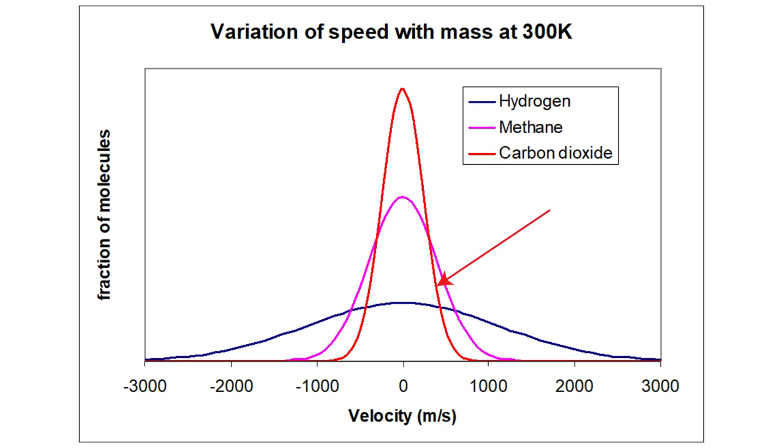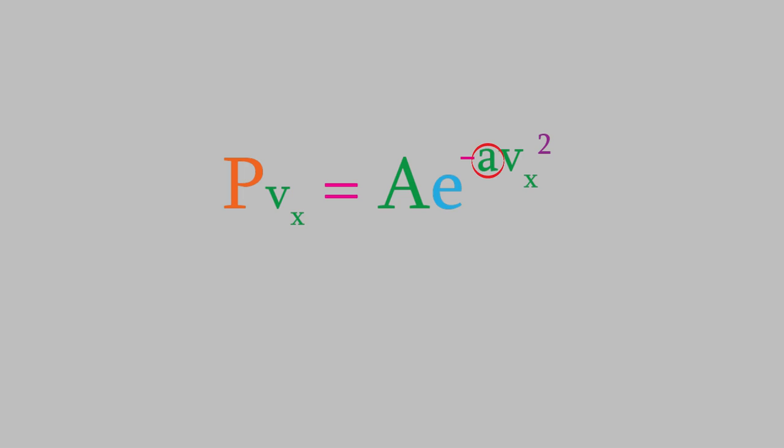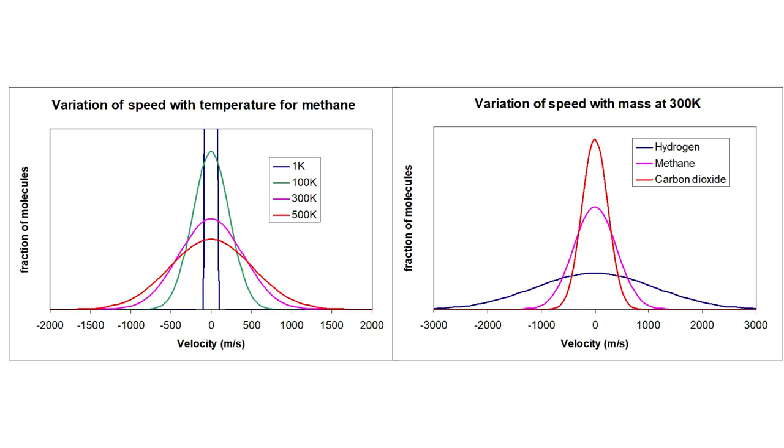So, what does all this tell us? For one thing, it means that the function A must involve both the temperature and the mass of the molecules, since both of those properties affect the width of the distribution. But unfortunately, there's also a feature of these curves that's not very realistic, and it's something that James Maxwell thought deeply about in order to understand how to make a more accurate equation for the velocity distribution.